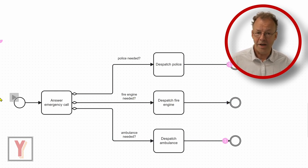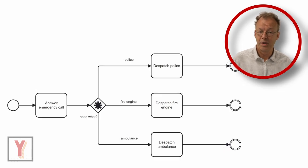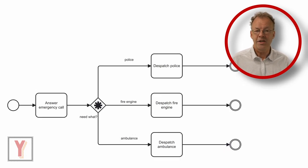The third way is with a complex gateway. Although this can be done, it is not advisable in this case, because the complex gateway should only be used for behavior that is not captured by other gateways.